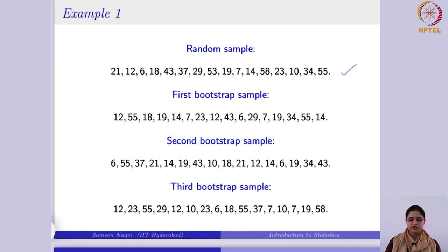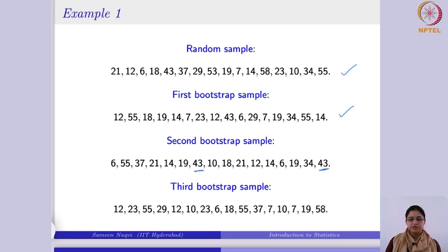For instance, if this is your random sample, you will resample from it to get your first bootstrap sample. When doing resampling with replacement, the same observation might occur multiple times — for example, 43 might appear twice, or 7 appears twice, 10 appears twice, and 12 also appears again. By analyzing these bootstrap samples, you can talk about the variability and then generalize.